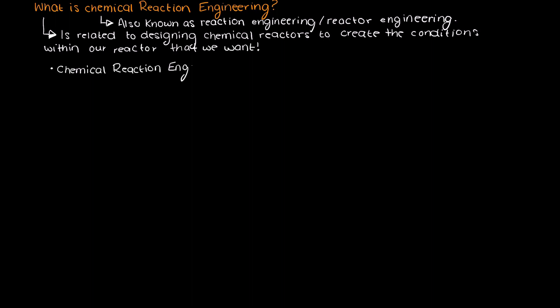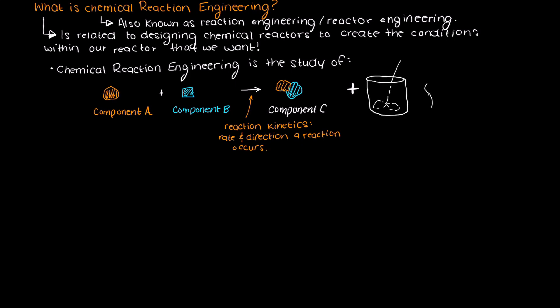So said more formally, chemical reaction engineering is basically the study of reaction kinetics, the rate and direction at which a reaction occurs, and the study of the reactors in which the reactions actually take place.